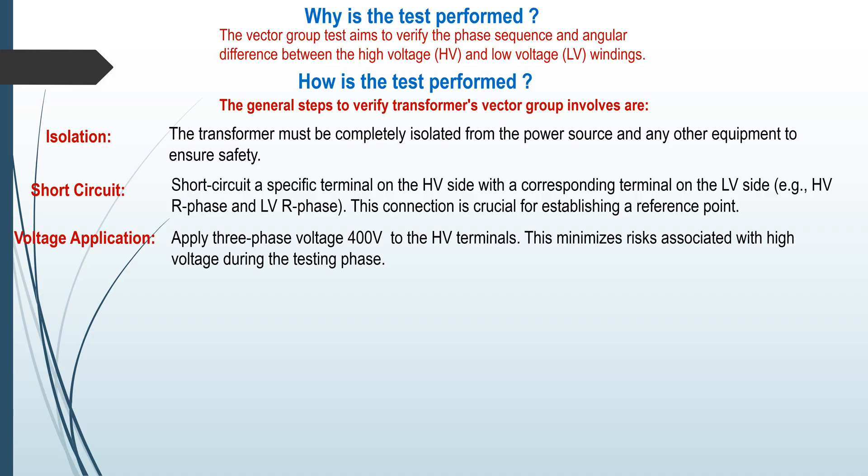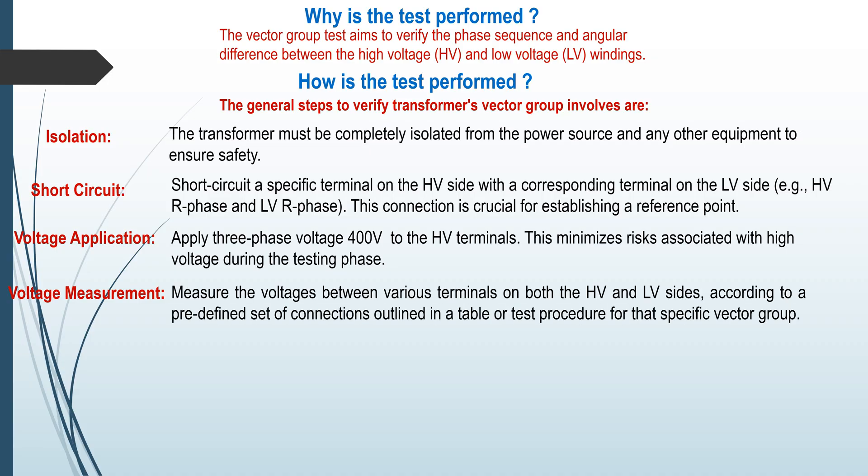Voltage application: Apply 3 phase voltage 400 volt to the HV terminal. This minimizes risks associated with high voltage during the testing phase. Voltage measurement: Measure the voltage between various terminals on both HV and LV sides according to predefined set of connections outlined in a table or test procedure for that specific vector group.